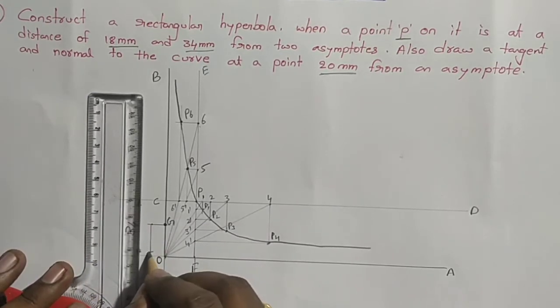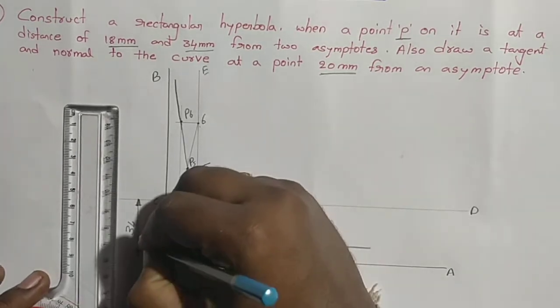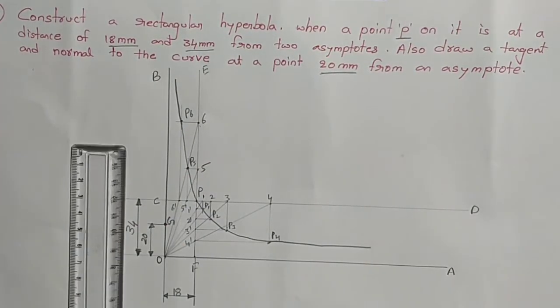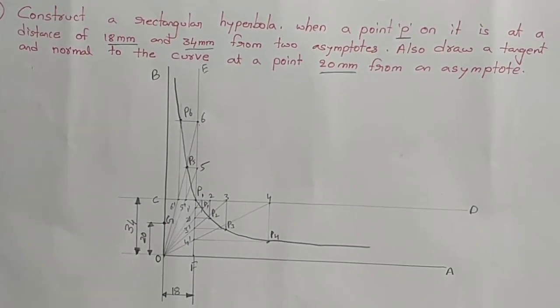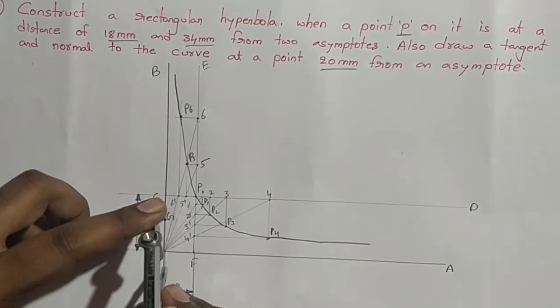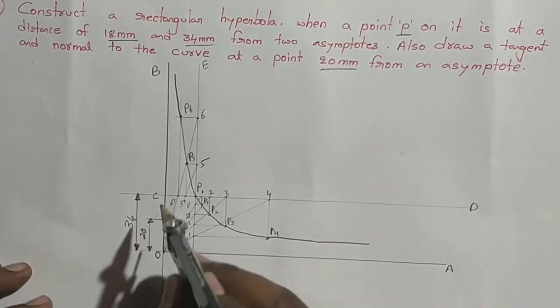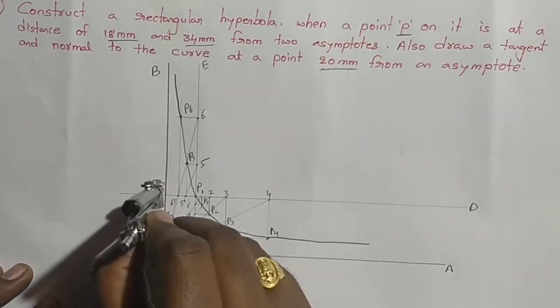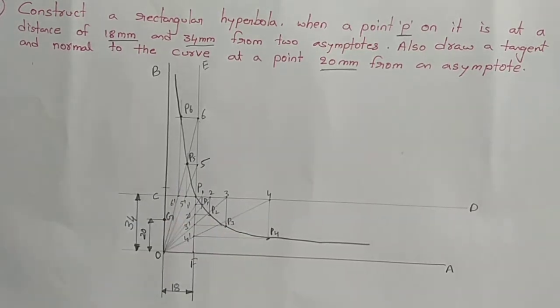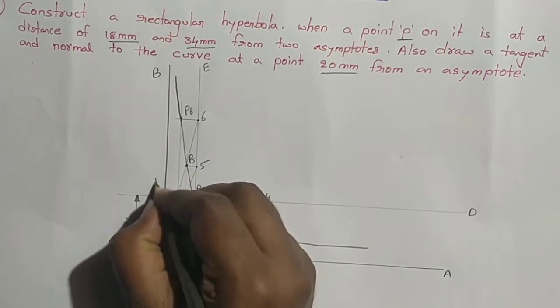It is 20mm from the x-axis. We need to cut the vertical axis with compass, with OG as radius and G as center, cut this line. We got one more point known as T.